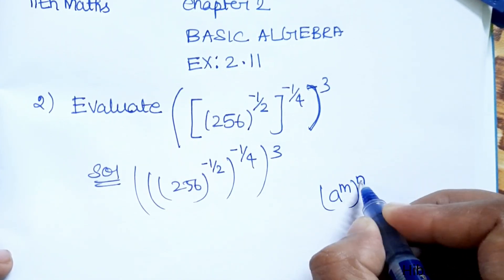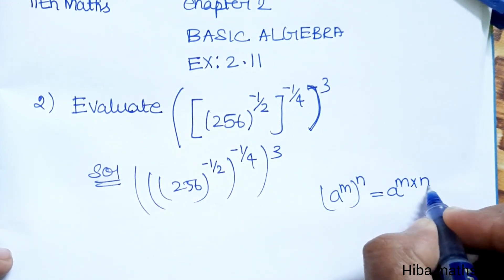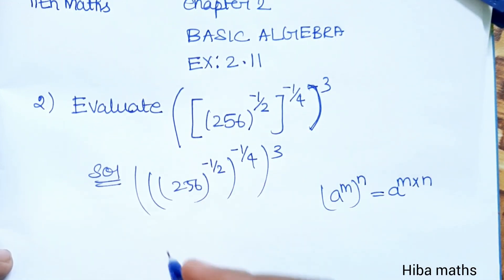When we have a power m, whole power n, that is equal to a power m into n. So with these powers, we multiply them.